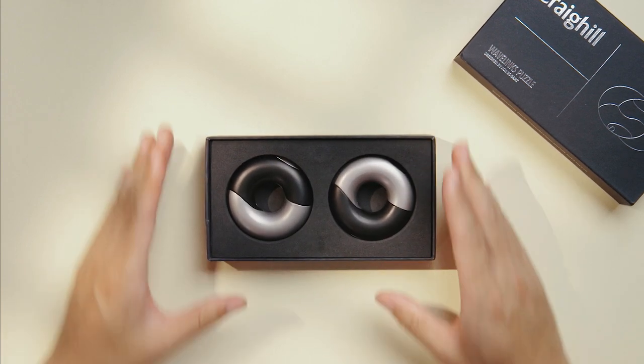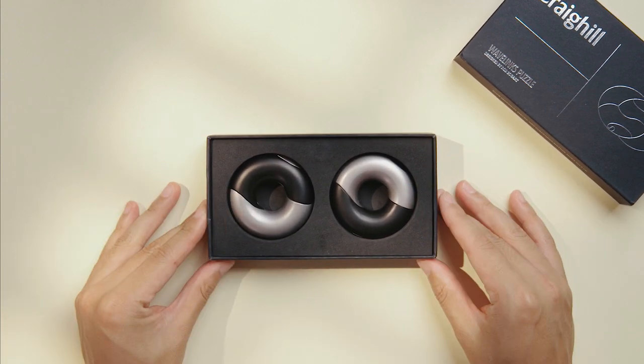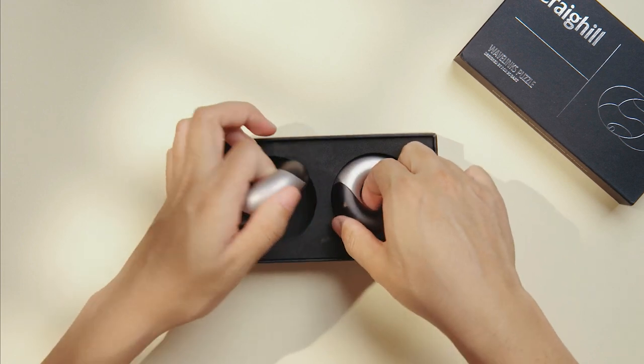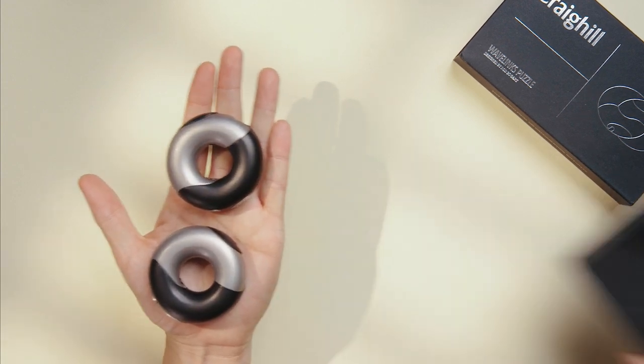When you first open your Wavelinks package, you will find two linked donuts. When you take them out of the package, be careful the puzzle doesn't fall apart by itself as you're going to want to study this form a little bit.